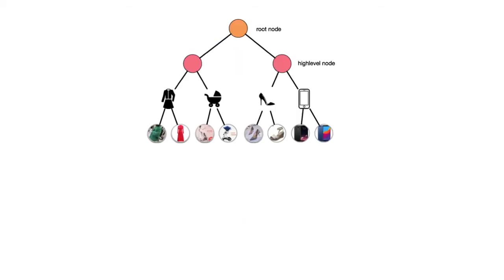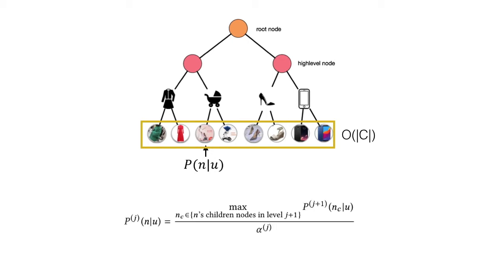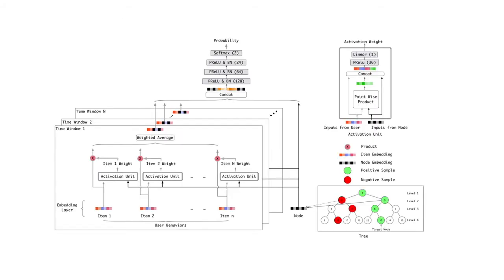Suppose that we have a tree where each leaf node corresponds to an item in the corpus. Denote P(N|U) as the probability that user U is interested in node N. To find top-K leaf nodes with the largest probability, the model has to traverse the entire corpus. However, if we have a tree where each node's probability satisfies the max heap-like property, we can retrieve the top-K leaf nodes top-down in logarithmic complexity.